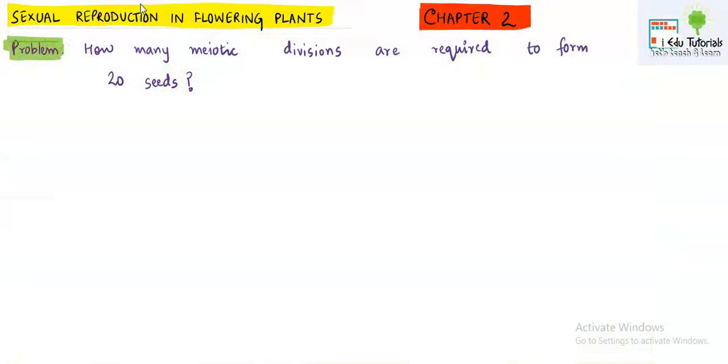Hello everyone, in this video we will look at two problems which are related to chapter number 2. The first problem says how many meiotic divisions are required to form 20 seeds. Now first of all you must know how a seed is formed.